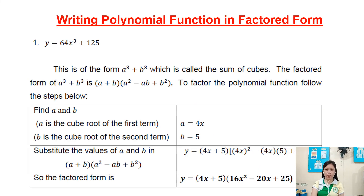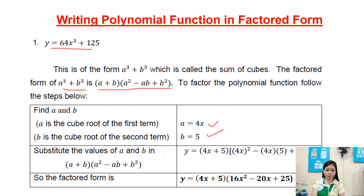Now, writing a polynomial function in factored form. Example: y equals 64x cubed plus 125. This is of the form a cubed plus b cubed, which is called the sum of cubes. The factored form of a cubed plus b cubed is a plus b times a squared minus ab plus b squared. Here, a is 4x and b is 5. Substituting, the factored form is y equals 4x plus 5 times 16x squared minus 20x plus 25.